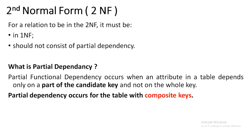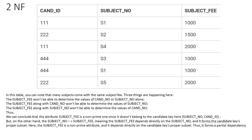What is partial dependency? With the given table, three columns are there: candidate ID, subject number and subject fee. Subject fee will be dependent upon subject number. When you are going with the primary key, you cannot take the candidate ID alone as a primary key because if you want to retrieve the fees of candidate 111, you don't know whether the fees are for 111 subject 1 or 111 subject 4. So we will be going with a composite key. A composite key is when you take two columns as a primary key — when both are combined together they give unique data, but if they are separated, no unique data will be present. This form of key is called a composite key. 2NF applies to tables having a composite key.